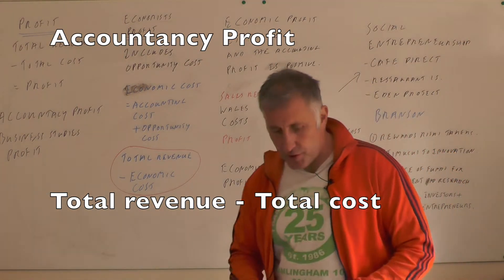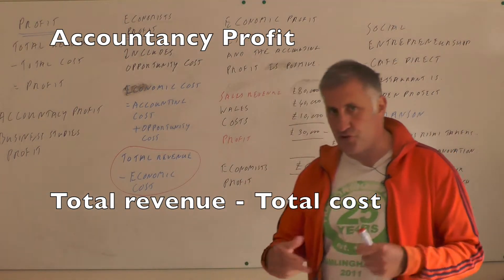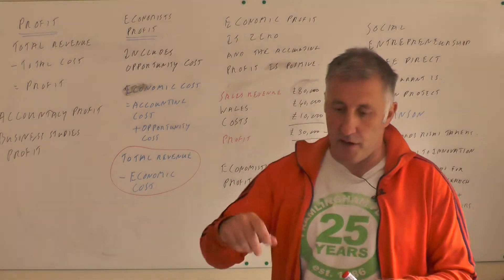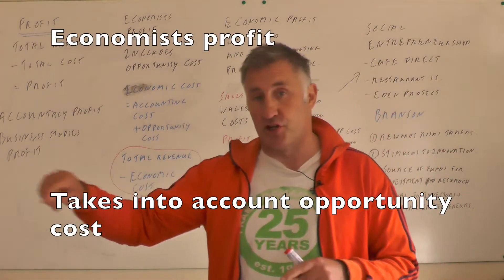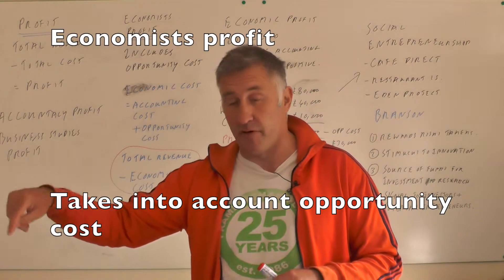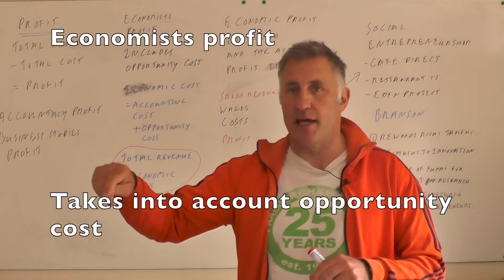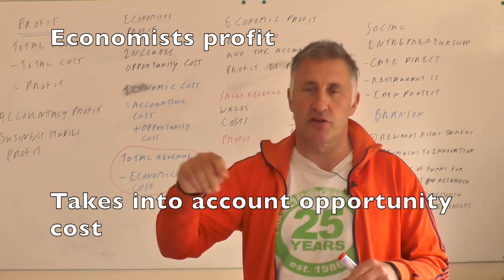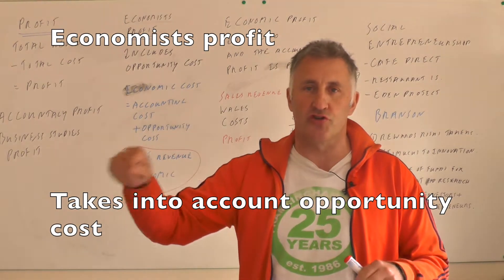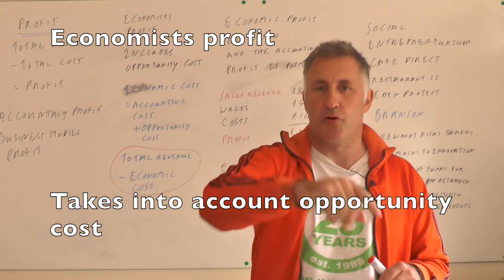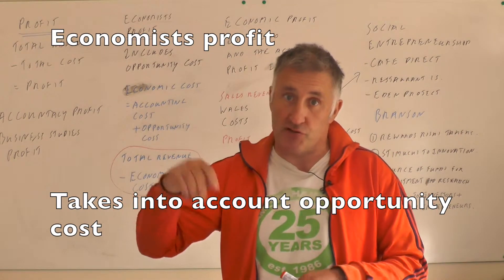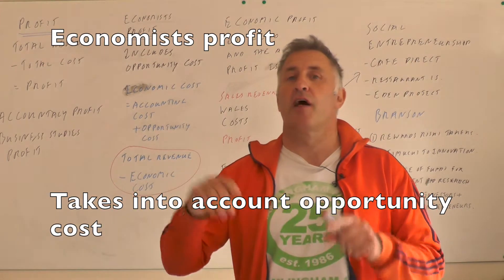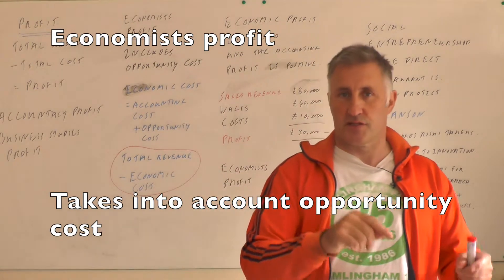Economist profit though is slightly different — it includes the opportunity costs. So for instance, I'm a teacher, so if I give up teaching, then I have to give up my wage and then take the opportunity cost away from the profit. So if I earn £30,000 as a teacher, then I have to give that money up in order to start up the business.